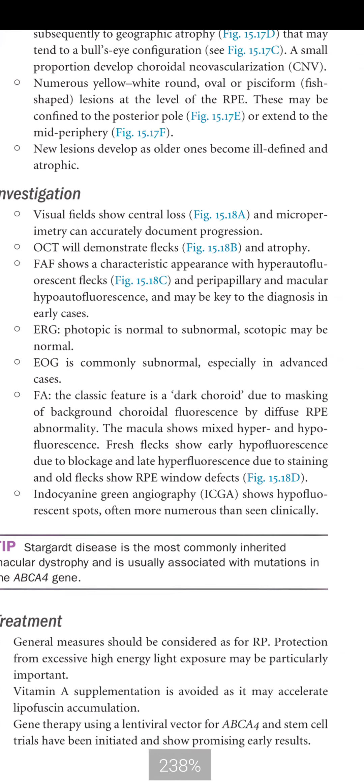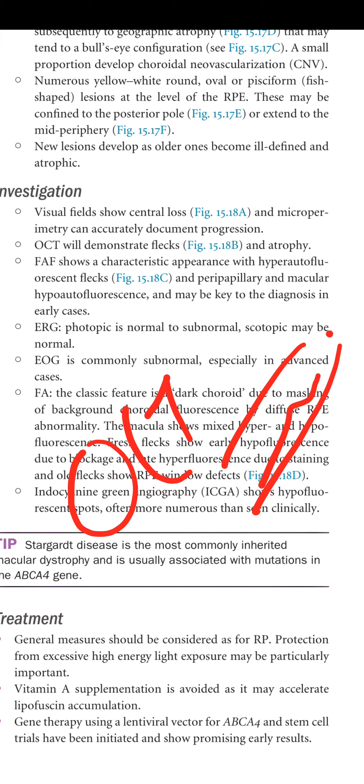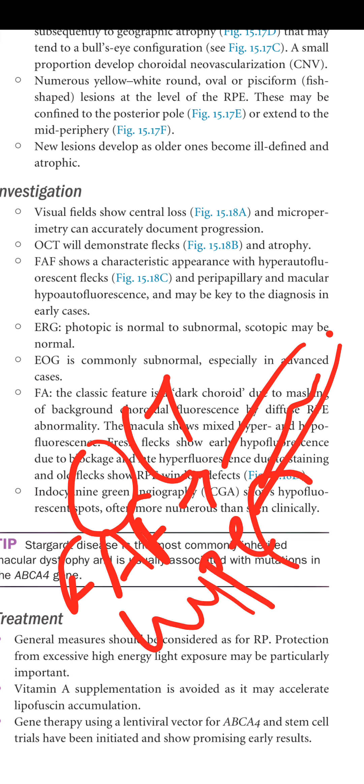Investigations: visual field may show central loss, and microperimetry can accurately document progression. OCT will demonstrate flecks and atrophy. Fundus autofluorescence (FAF) shows a characteristic appearance with hyper-autofluorescent flecks and peripapillary and macular hypo-autofluorescence, and may be key to diagnosis in early cases.